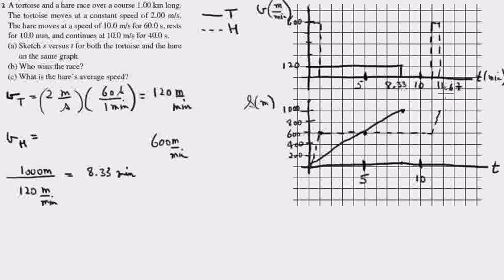What is the hare's average speed? Okay, so the average speed of the hare is the distance that he runs, divided by the time he takes to run it, 11.67 minutes. And that computes to be 85.69 meters per minute.